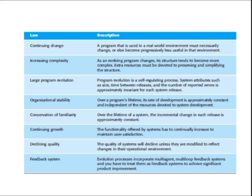The third law is Large Program Evolution: program evolution is a self-regulating process. System attributes such as size, time between releases, and the number of reported errors are approximately invariant across system releases. In simple words, evolution need not be small — it may be a large process. The size of your software, time between releases, and the number of reported errors may be large with respect to each release. Program evolution may be large; it may not be that simple.